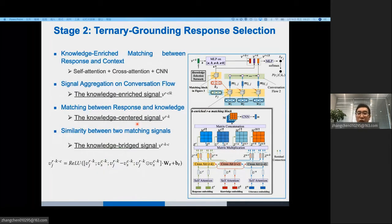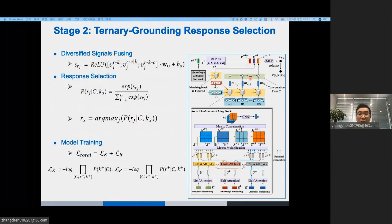we perform knowledge-enriched matching between response and context to get the first signal. The network block is similar to the block introduced before, including the self-attention, cross-attention, and CNN. Then, the first signal is extracted by signal aggregation on the conversation flow. Next, the second signal, called knowledge-centered signal, is extracted by performing the matching between response and knowledge in the matching block. Last, the third signal is measured by calculating the similarity between VCK and VRK.